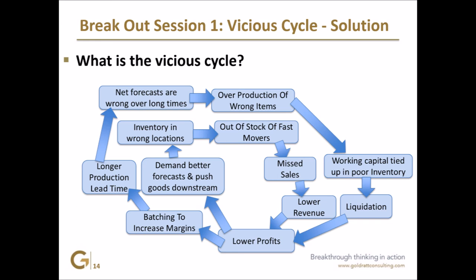Forecasts are wrong, because now we're very far out in time horizon. We need to forecast three or four months out. We don't know what the weather is going to be five days from now — and we're going to be able to tell what we sell. So that leads to overproduction, or it can lead to lower production and under-production. Working capital being tied up, and all that poor inventory we have to get rid of — so we start liquidating. We start selling stuff at a very steep discount, lower profits, and the cycle starts.